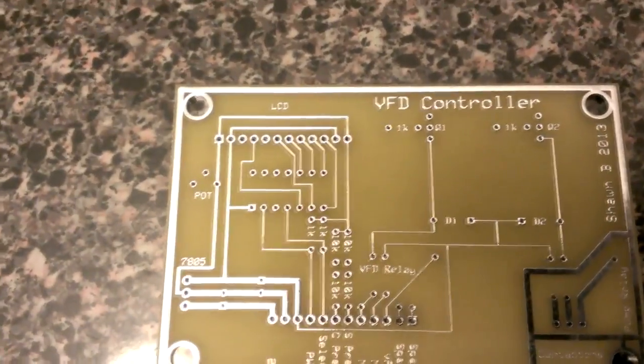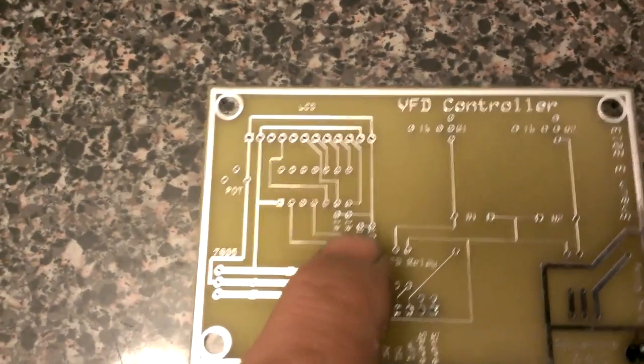7805 voltage regulator there. Capacitor, capacitor, pull down resistors. There and here.